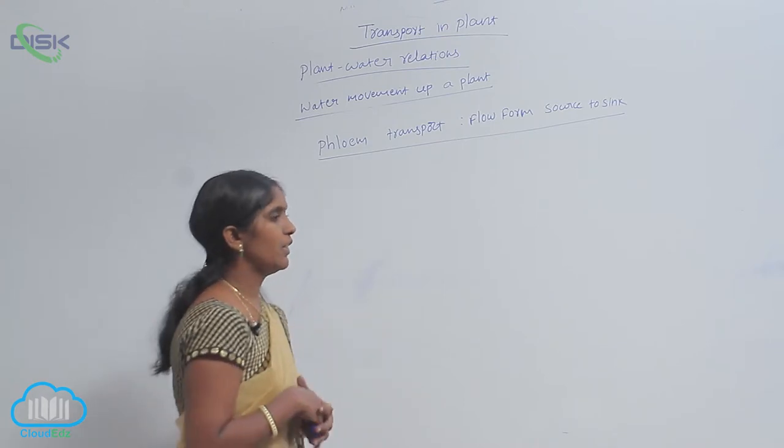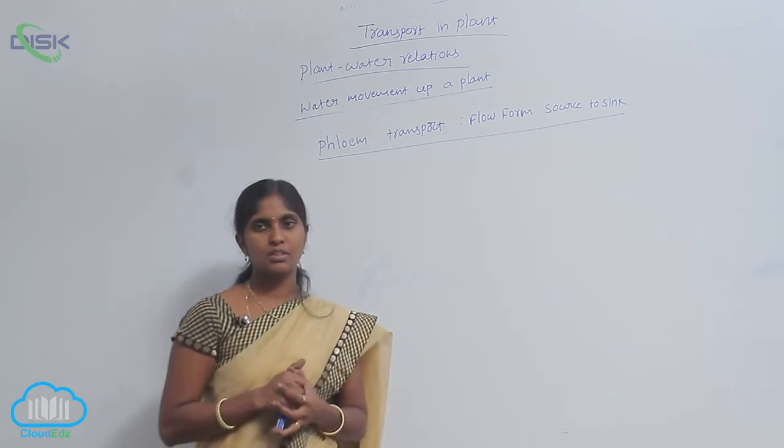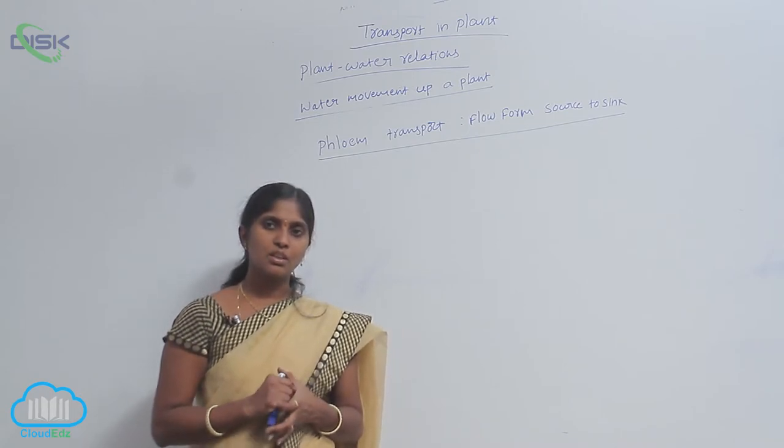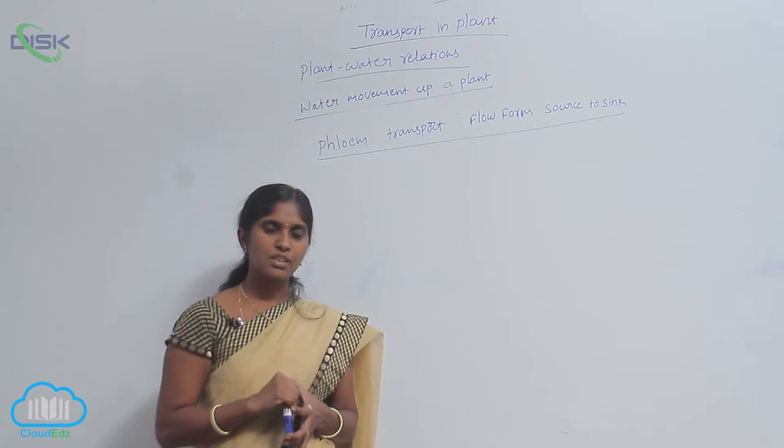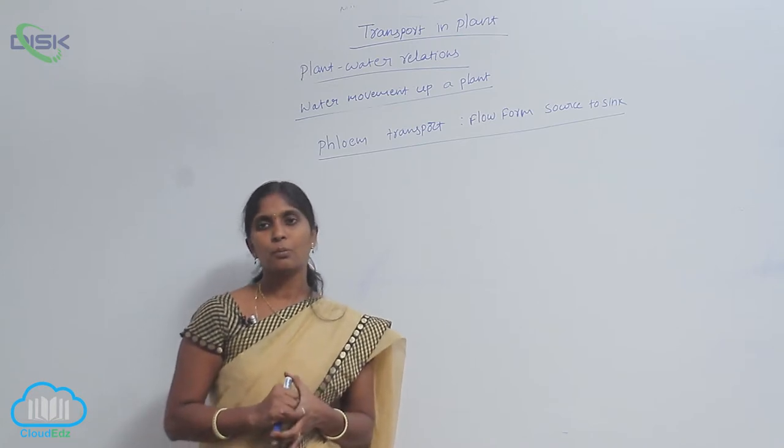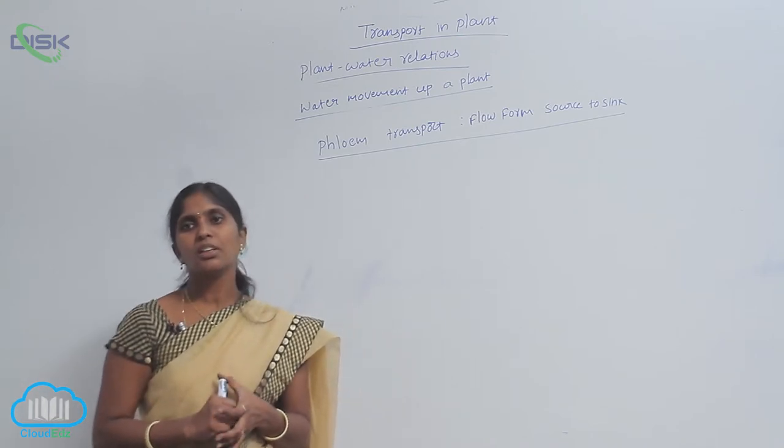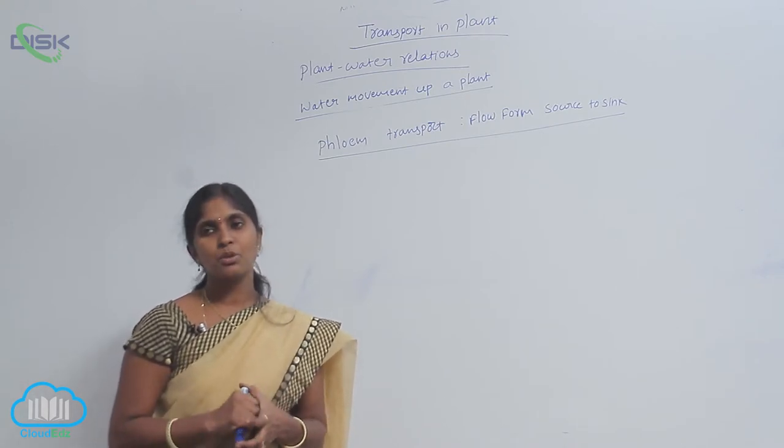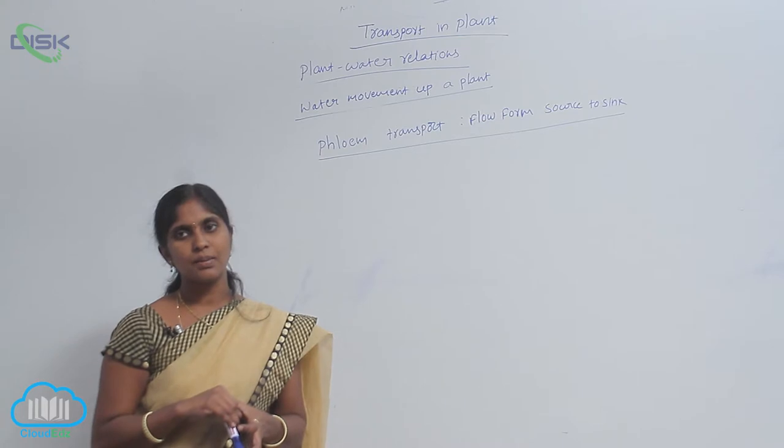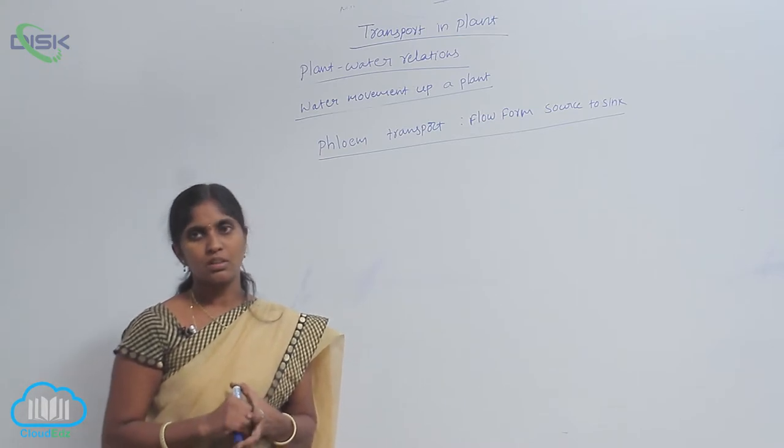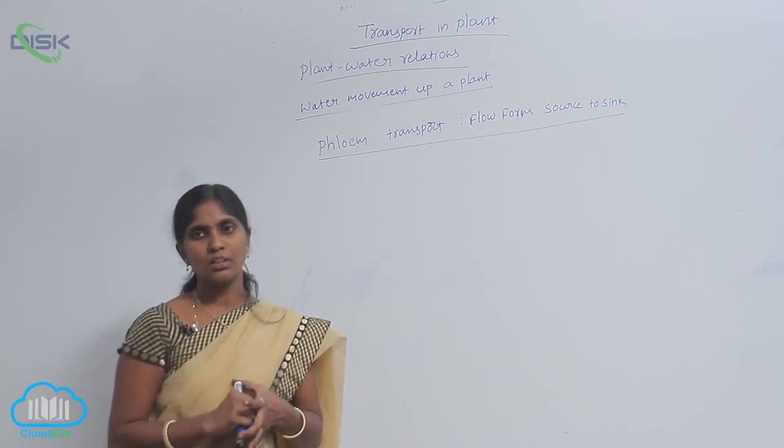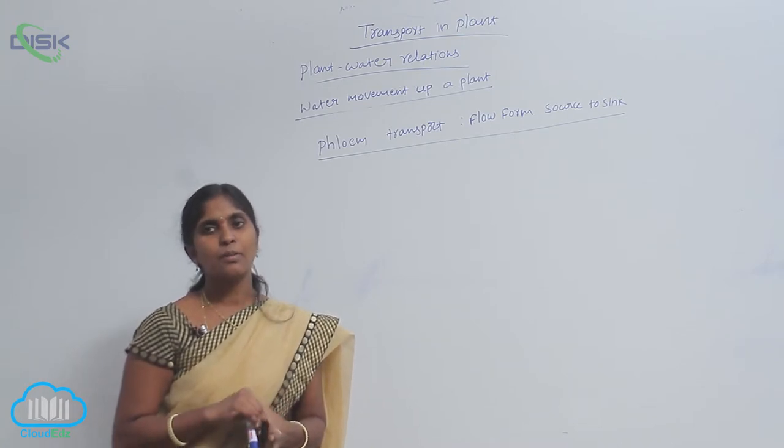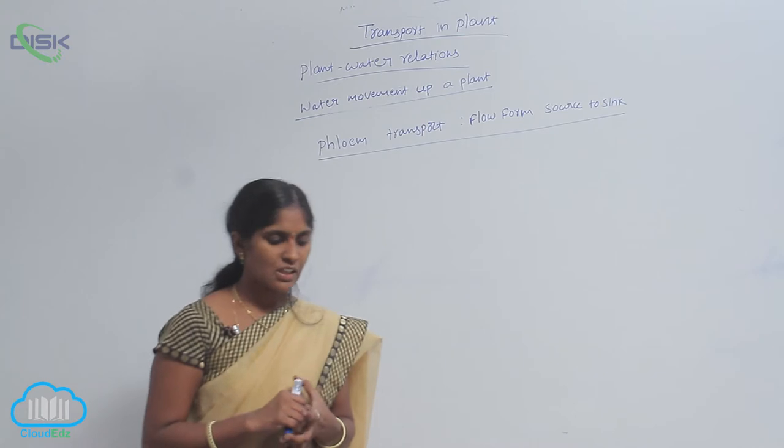During photosynthesis, glucose is formed at leaves. The formed glucose is converted into sucrose. The sucrose is absorbed by the companion cells and then by the adjacent sieve tube cells.